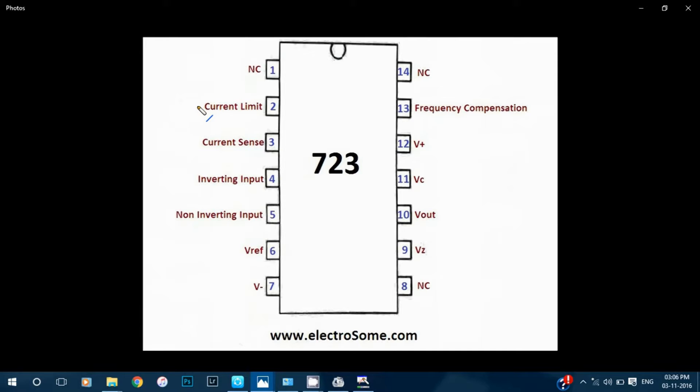Here is the pin description. The second pin is the current limit. It is the base input of the current limiter transistor. This pin is used for current limiting or current foldback applications.